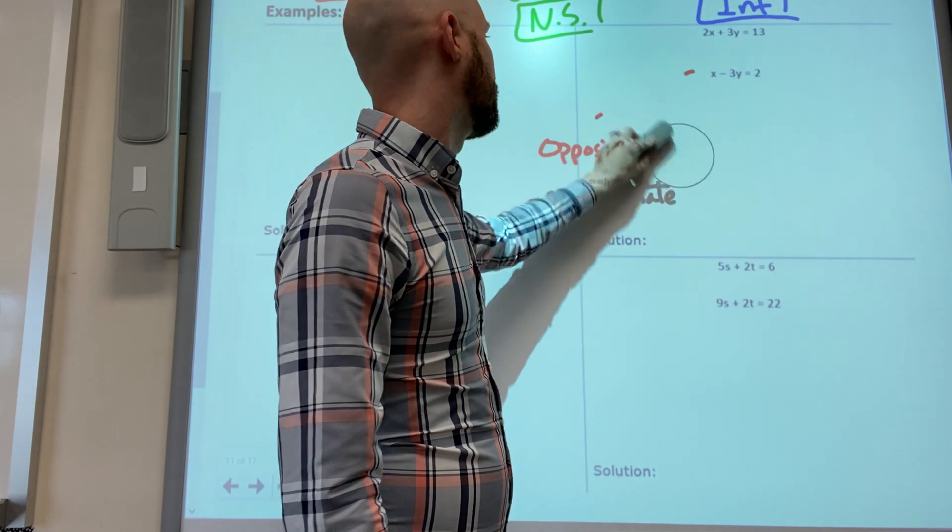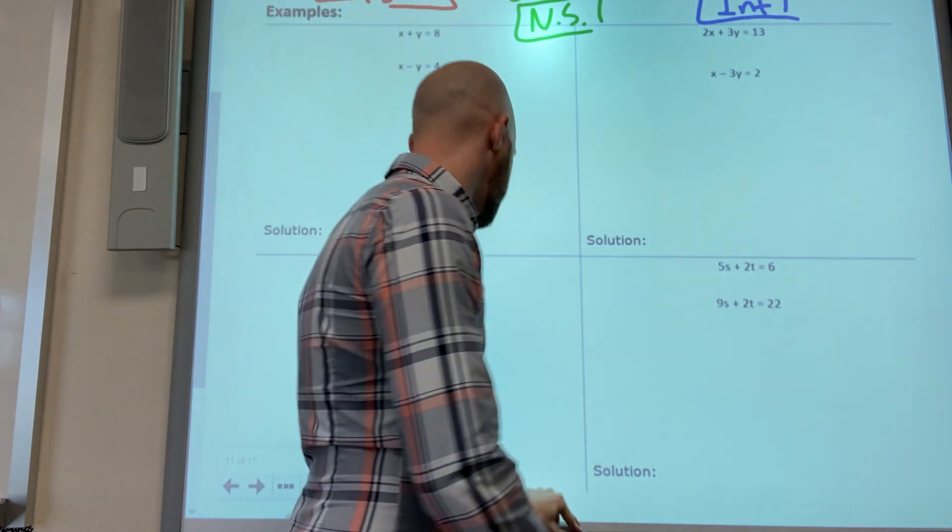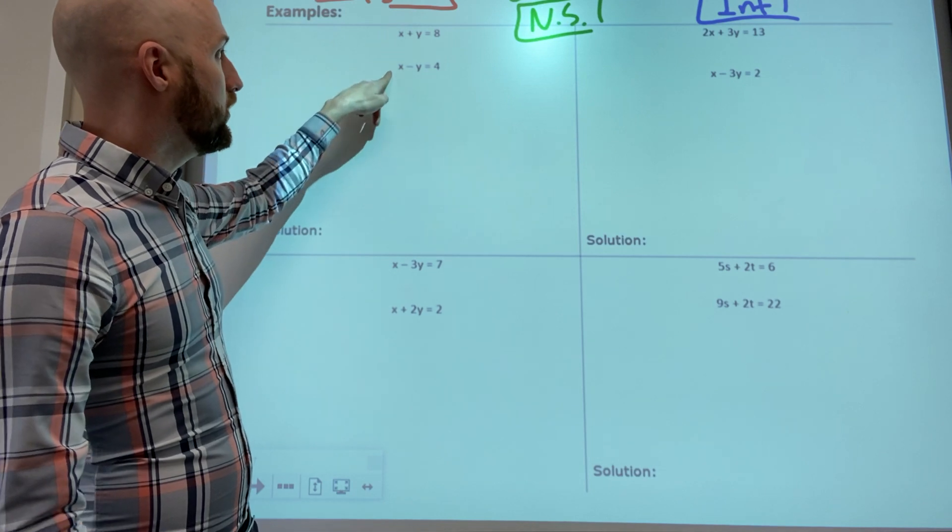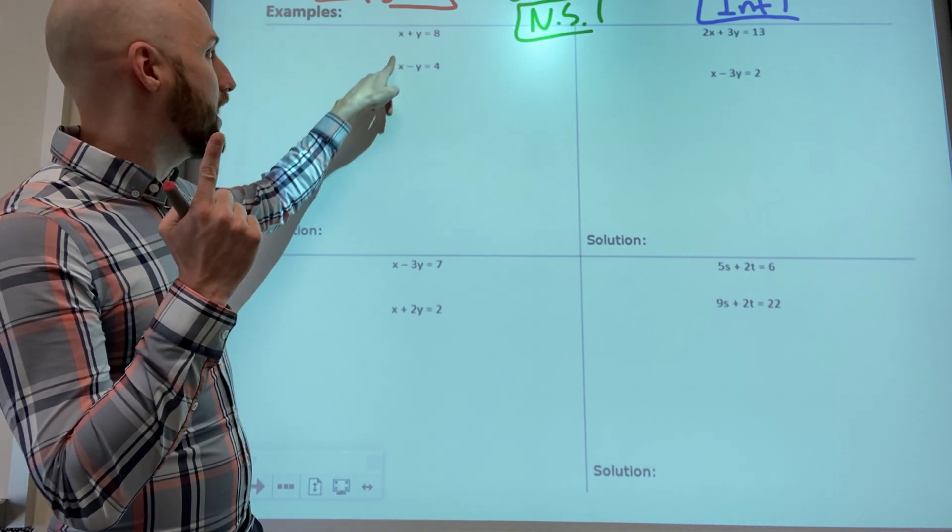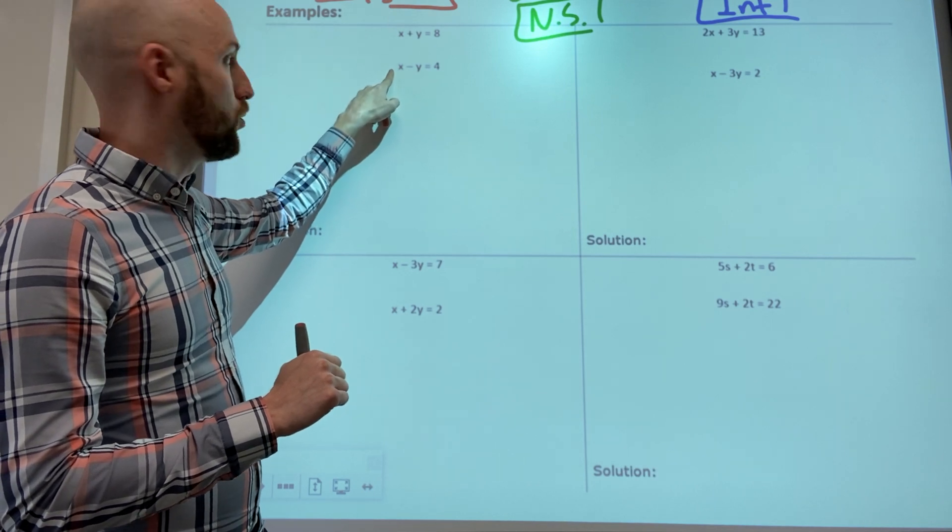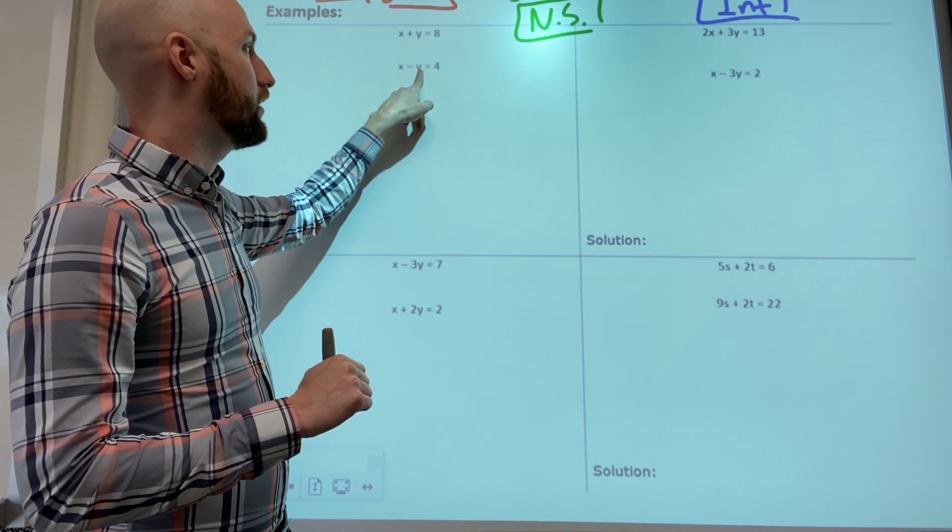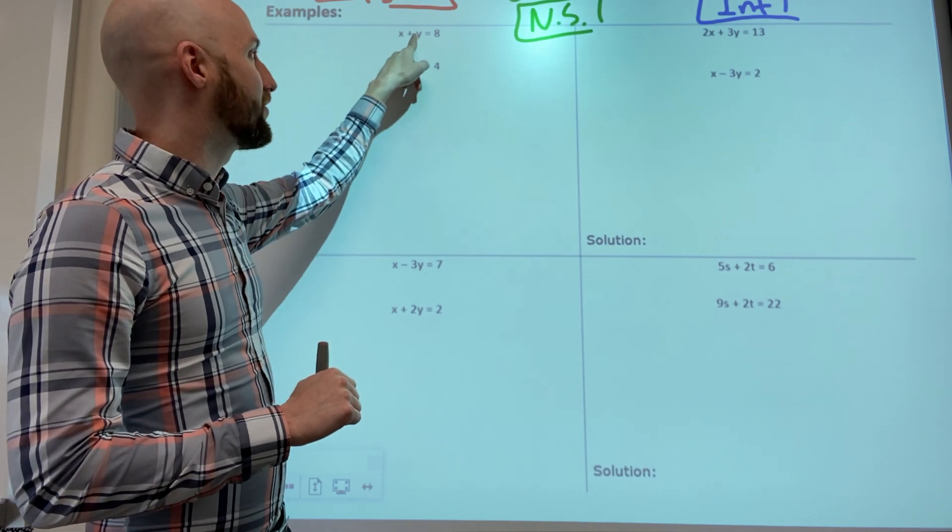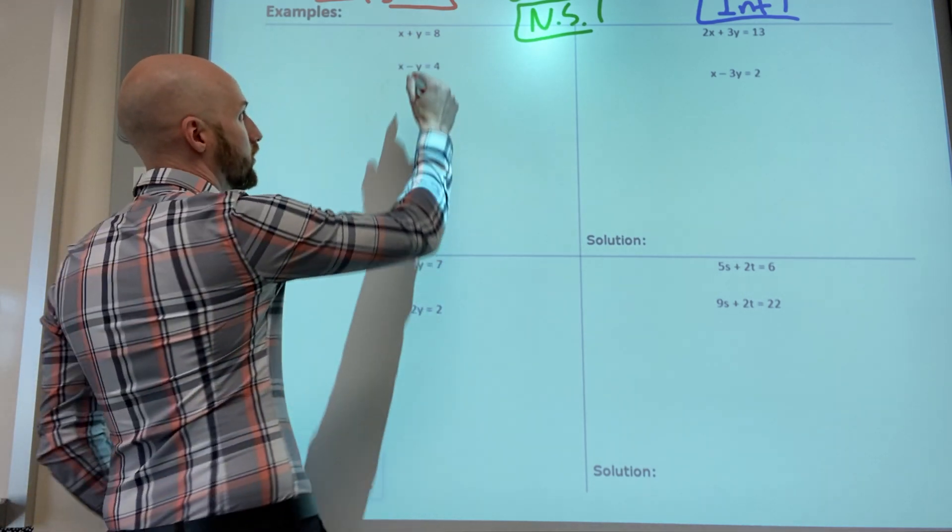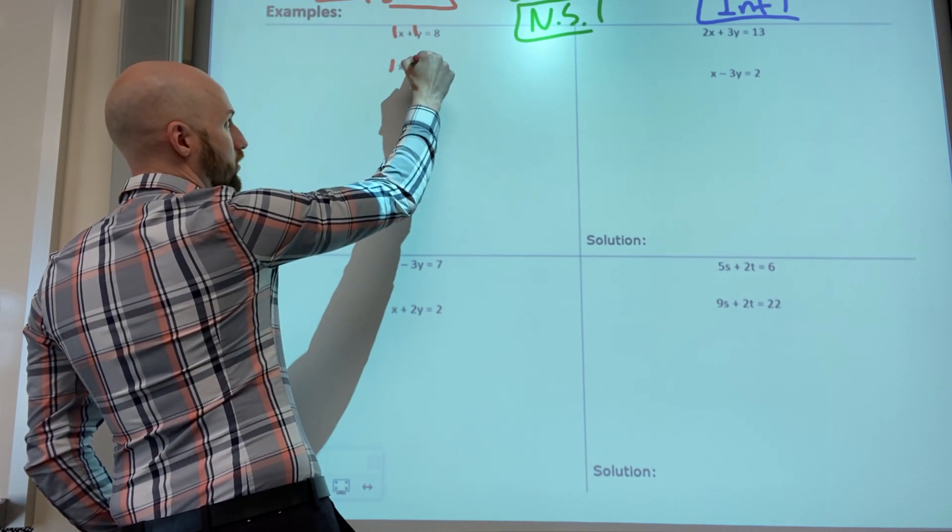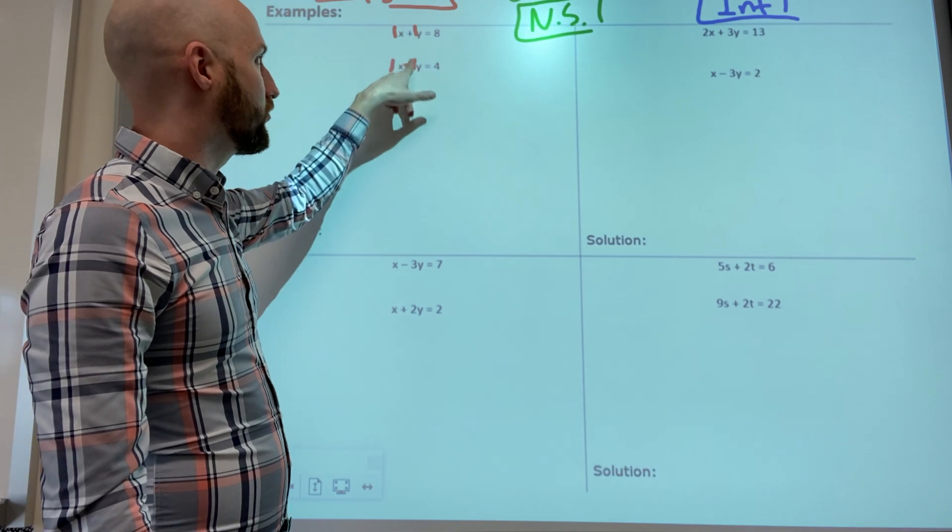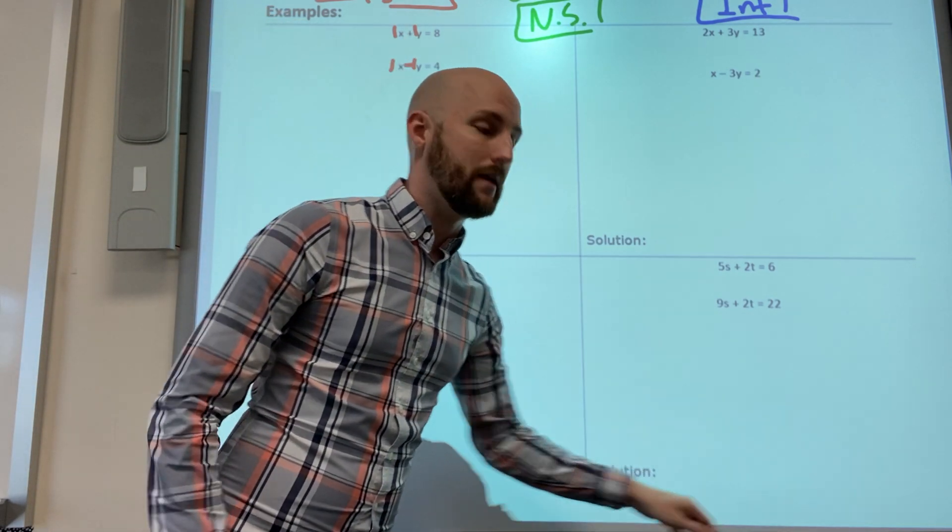Let's take a look. Do I have the same number? Yes, one and one. Is it opposite sign? No. Do I have the same number? One and one. Opposite sign? Uh-huh. Si yo tengo mismo número y tengo signo opuesto positive and negative one then this will eliminate.